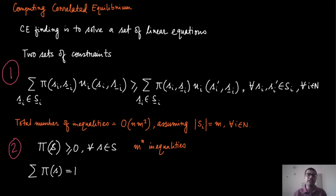This is essentially a set of linear equations. We can contrast this with the mixed strategy Nash equilibrium, where the equations for more than two players are not linear anymore. But here in correlated equilibrium, the constraints are all linear inequalities. Because we are randomizing not over independent strategies — our variables are the probability mass on the strategy profile itself, and that makes it much easier.